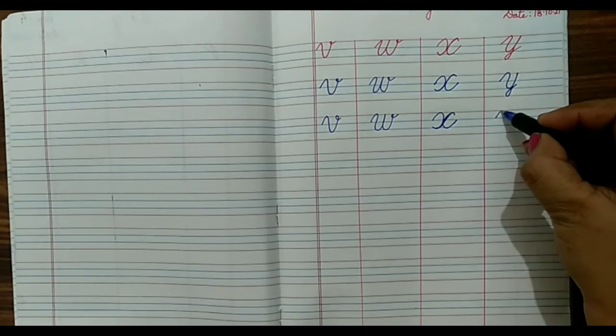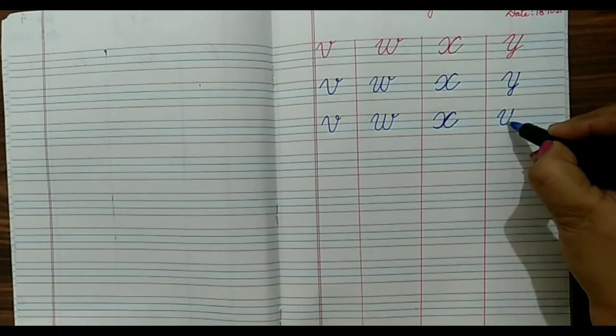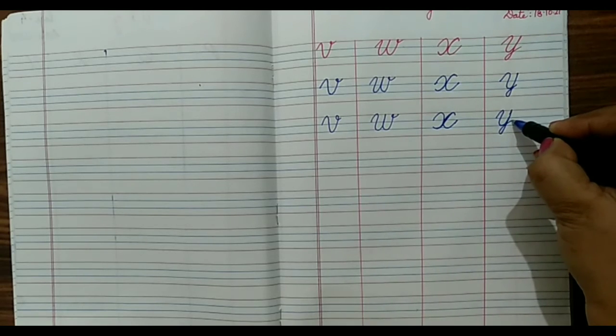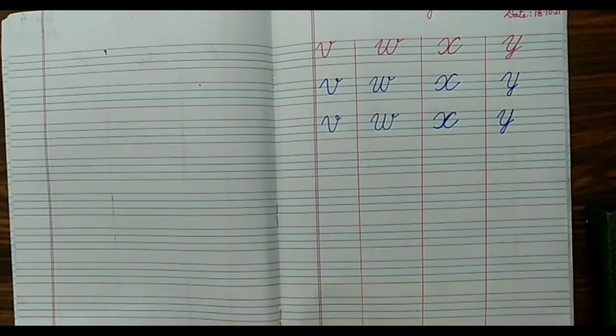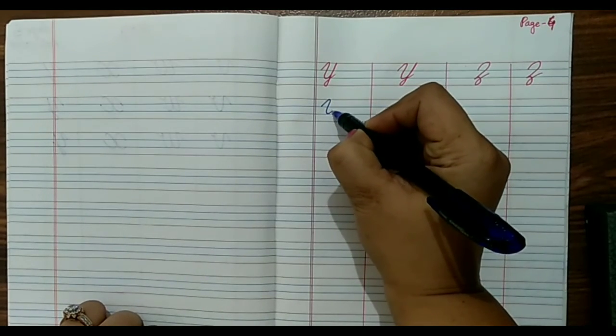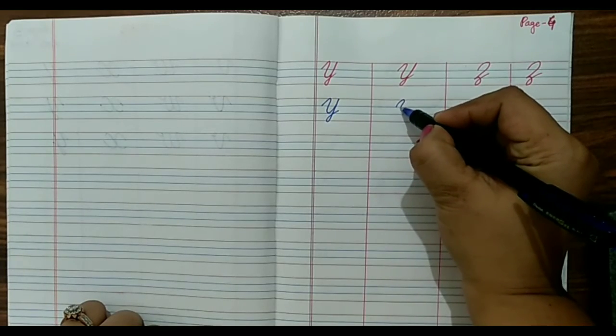For Y, we will just write like U but you have to drag it down to red and make a tail. Let us see Y once again. It's a bit tricky. You have to go slanting also.